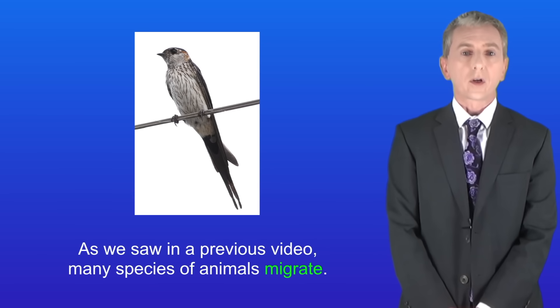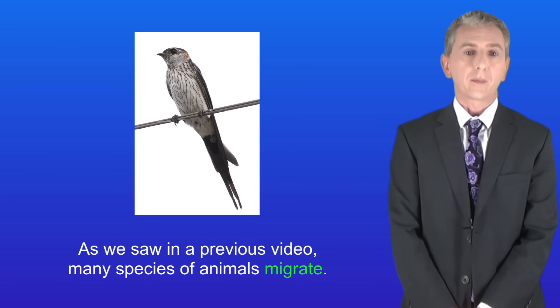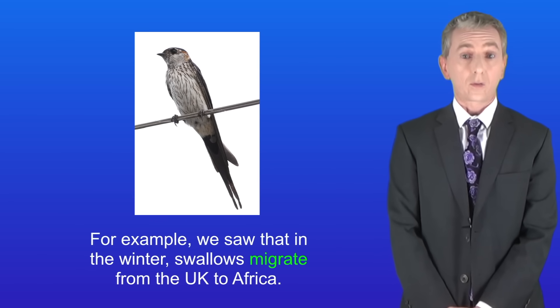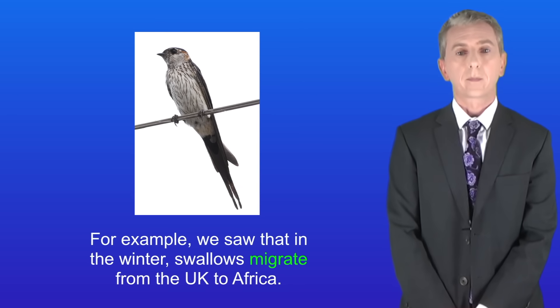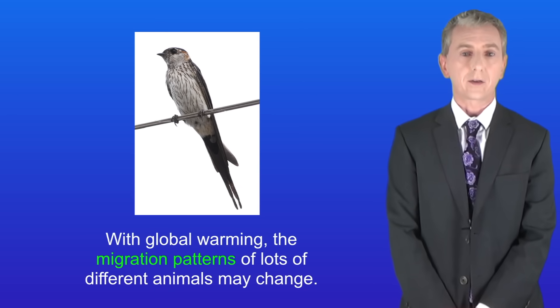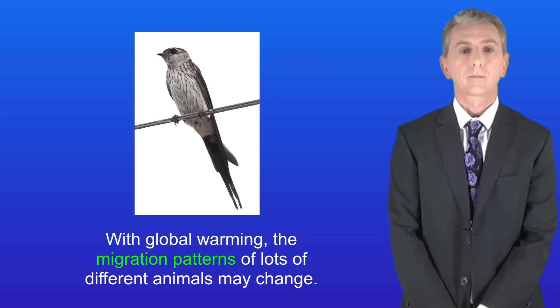As we saw in a previous video, many species of animals migrate. For example, in the winter swallows migrate from the UK to Africa. With global warming the migration patterns of lots of different animals may change.